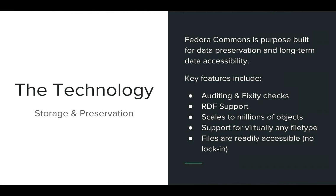The final core component is Fedora Commons. This is the layer that stores and preserves all of our digital content. Fedora Commons is purpose-built for data preservation and long-term data accessibility. Key features include auditing and fixity checks, RDF and XML support, and we're able to scale Fedora Commons to millions of objects. It has support for virtually any file type and it's built for interoperability, meaning you can export or migrate your data should you choose.